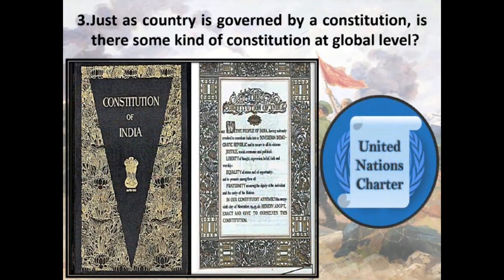Question 3: Just as a country is governed by a constitution, is there some kind of constitution at global level? Answer: Yes. Just as a country is governed by a constitution, nations at a global level are governed by the Charter of the United Nations, which is intended to facilitate smooth functioning of international operations and maintaining peace at a global level. Just like a constitution, the Charter of the United Nations also has chapters, articles, and provisions for amendments. Also, the task of making international laws is done by the International Court of Justice, which falls under the United Nations.